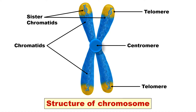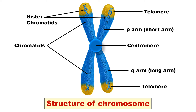Telomeres are the specialized ends of the chromosomes; they have specialized polarity and exhibit specific physiological functions. Due to the centromere, the chromosome is divided into two arms: the short arm is called the P arm while the long arm is called the Q arm. The chromosome essentially consists of DNA folded into the shape of a chromosome.